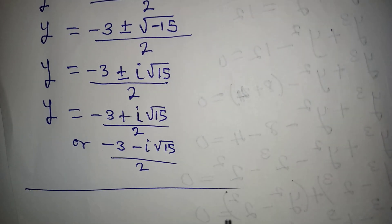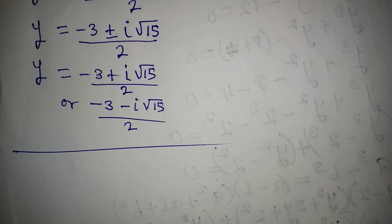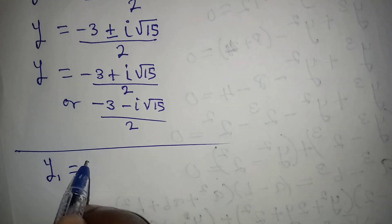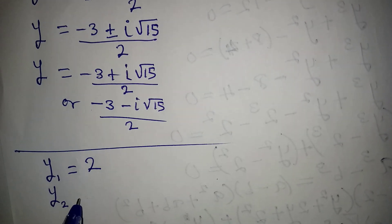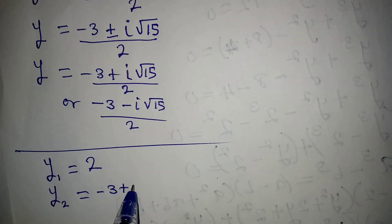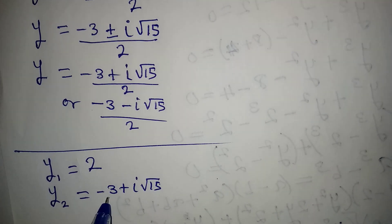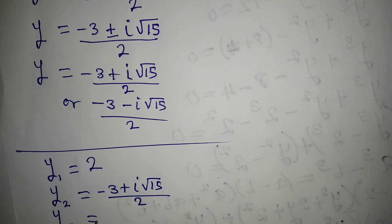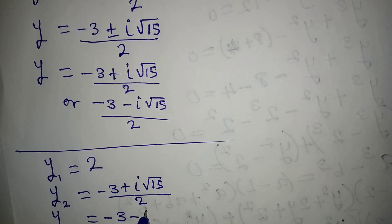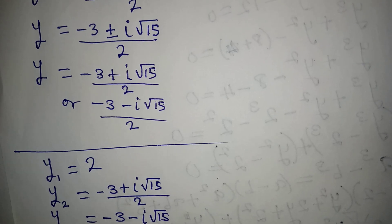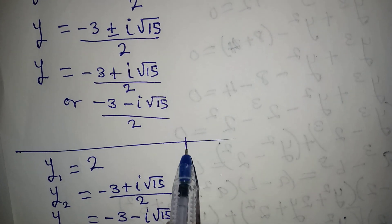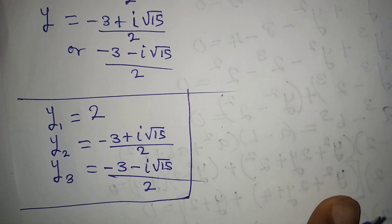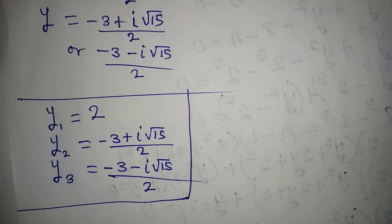Now let me bring the three solutions together. y1 equals 2. y2 equals minus 3 plus i root 15, over 2. And y3 equals minus 3 minus i root 15, over 2. So these are the three values of y. Thank you for watching.